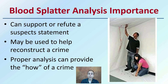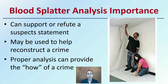Blood spatter analysis is important because it can support or refute suspect statements and may be used to help reconstruct a crime scene. Proper analysis can provide the 'how' of a crime. This is why we're not just looking at it as 'we found blood evidence' — we want to analyze that spatter pattern.